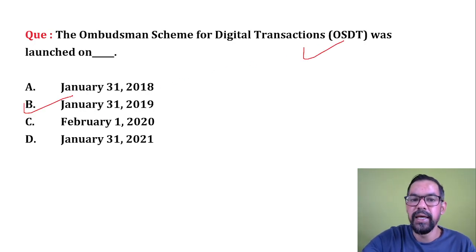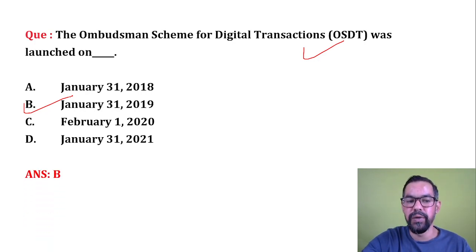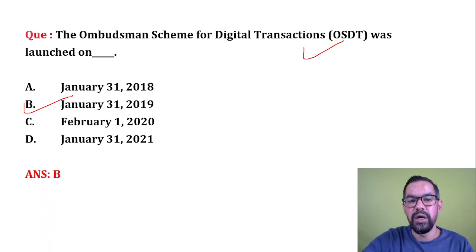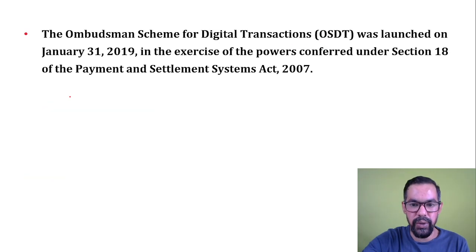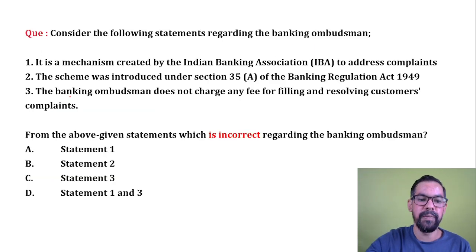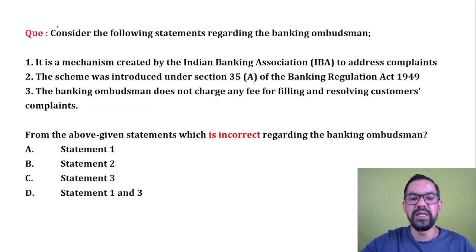Next question: The Ombudsman Scheme for Digital Transaction was launched on which date? The correct answer is 31st January 2019.